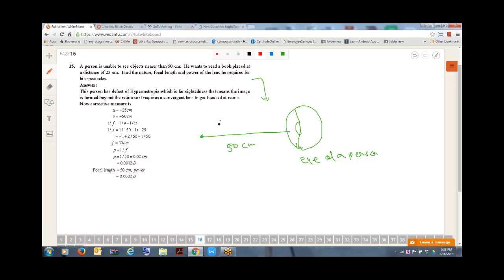Now they are saying in the question, if you keep the object over here, this person will not be able to see this. Because this person with his naked eye will not be able to see this as he is suffering from hypermetropia.